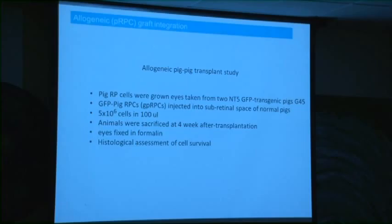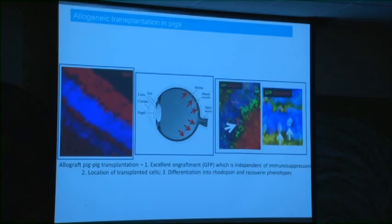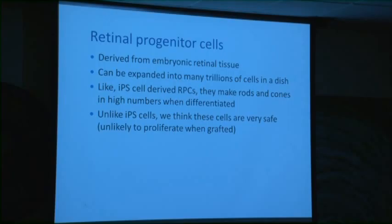We've also done work in RCS rats — these cells rescue diseased photoreceptors in RCS rats. Not surprisingly, they make lots of growth factors, and the rescue is anatomical as well. In pig-to-pig studies, these cells can also make photoreceptors, here shown as a bolus of cells in the subretinal space sending synaptic processes into the appropriate plexiform layers.